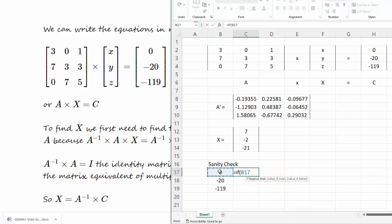As an additional check I can say that if this cell is equal to this cell then print the word okay, otherwise print the word bad. And so that's okay, and now if I copy that down I can see all the equations calculate correctly.